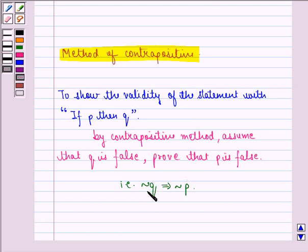So here in order to prove that P implies Q, it is enough to show that P is not true implies Q is not true, which is the contrapositive of the statement P implies Q.